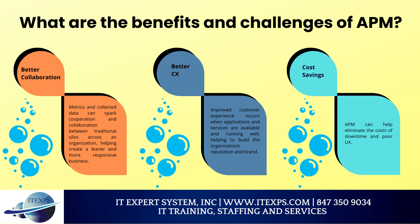What are the benefits and challenges of APM? APM is used to proactively monitor the behaviors and performance of an application and its environment to identify and correct issues before the application is affected to any noticeable degree. There are three major benefits to APM. First, better collaboration — metrics and collected data can spark cooperation between traditional silos across an organization, helping create a leaner and more responsive business. Second, better customer experience — improved CX occurs when applications and services are available and running well, helping to build the organization's reputation and brand. Third, cost savings — APM can help eliminate the costs of downtime and poor UX.